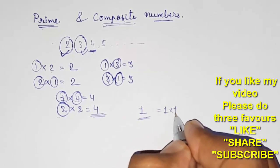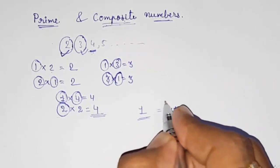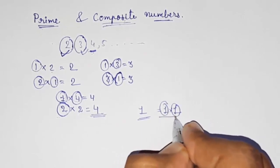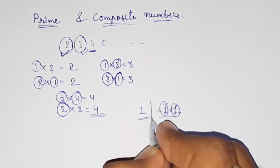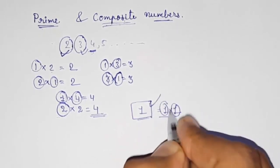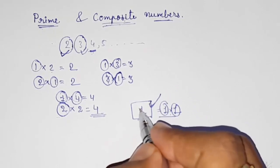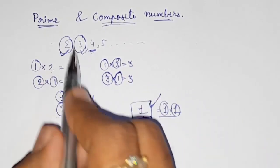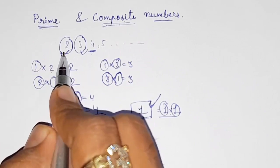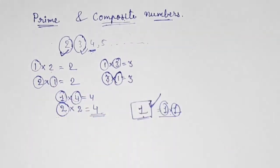Now, why is one not a prime or composite number? Because one is only having one factor: one into one is one, so one is its own only factor. One is neither prime nor composite — one is called a unique number. It has only one factor. So prime and composite numbers start from two up to infinity.